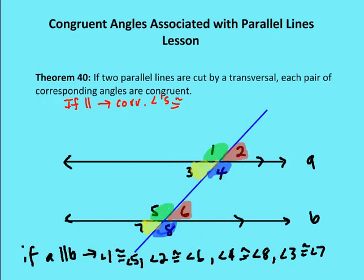Theorem 40 says if I have two parallel lines cut by a transversal, each pair of corresponding angles are congruent. Corresponding angles are on the same side of the transversal — one is exterior to the parallel lines and one is interior, and they share a different vertex. So angles one and five are corresponding, two and six are corresponding, three and seven are corresponding, and four and eight are corresponding — four pairs in total. If line A is parallel to B, then angle one is congruent to five, angle two is congruent to six, angle four is congruent to eight, and angle three is congruent to seven.